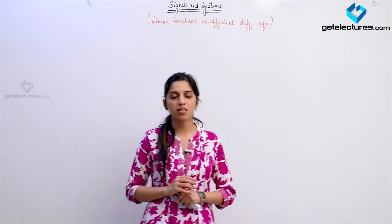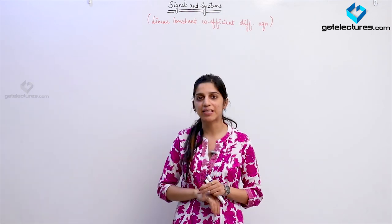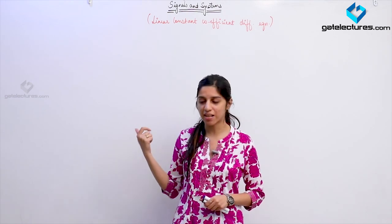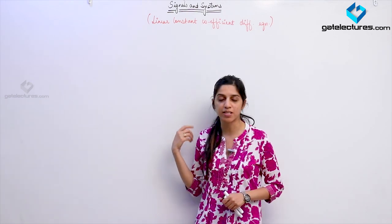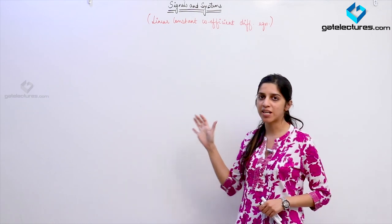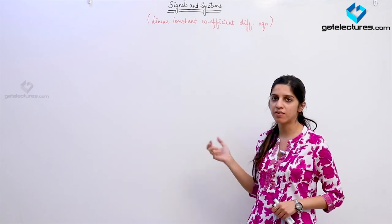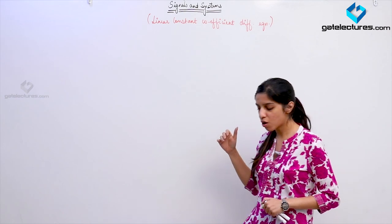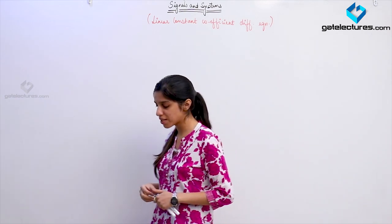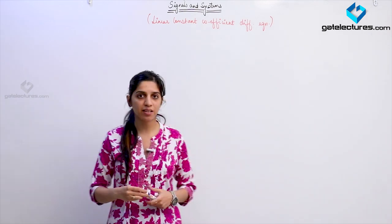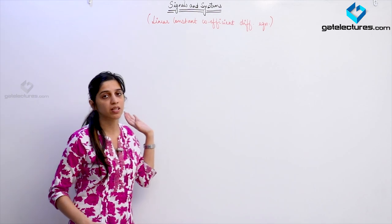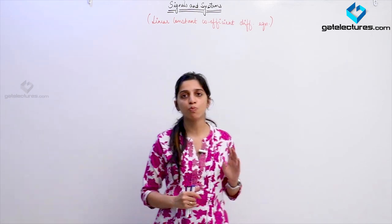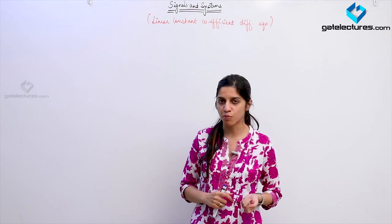Since we are interested only in LTI systems, we are going to see how we check linearity and time invariance of a signal using its differential equation — a given differential equation. How can we check all the properties? One more thing to notice is that this representation using a differential equation is the closest, most accurate possible way to represent a system.